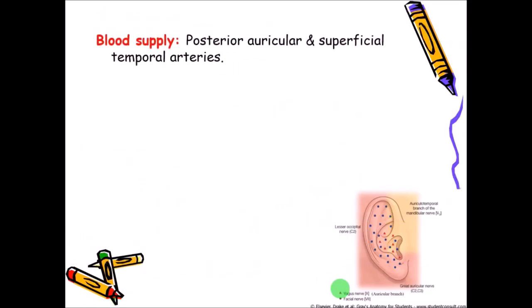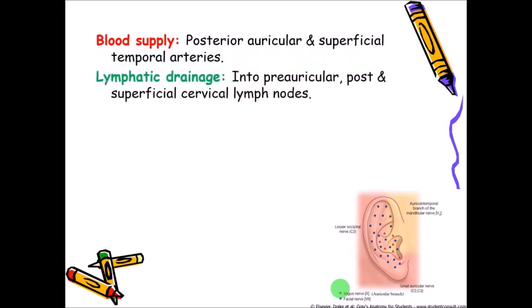The blood supply of the pinna or auricle is by the posterior auricular artery and the superficial temporal artery and its branches. The lymphatic drainage is into the preauricular and postauricular groups of lymph nodes, and these finally drain into the superficial cervical group of lymph nodes.